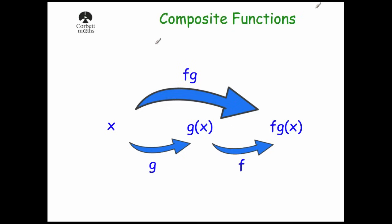Hello, in this video we're going to look at composite functions. So if we've got a variable x, we can apply a function g to it and we would get g of x. And then we could apply the function f to g of x and we would get fg of x. Rather than getting from x to fg of x in two steps by applying two different functions, we could apply one composite function fg and that would bring us straight from x to fg of x. So that's what a composite function is.